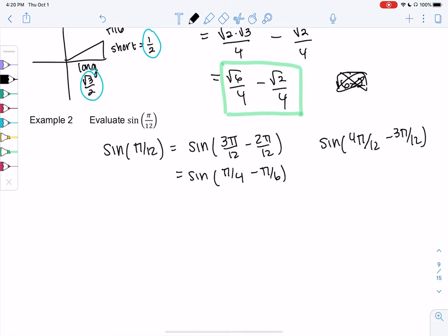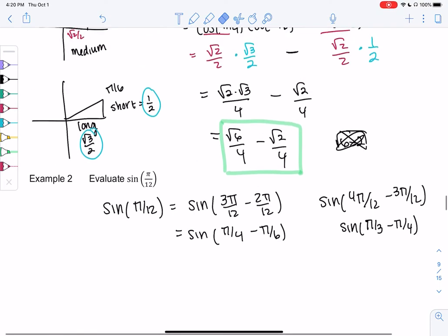And 3 pi over 12, because those would be what? Pi over 3, which is something we know, and pi over 4. So sometimes there's more than one answer. But we just want to make sure they simplify to angles that we know on the unit circle.